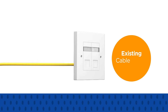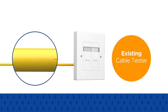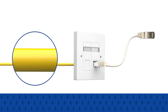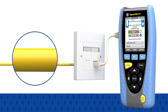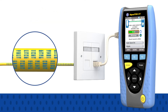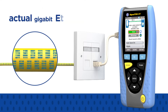Existing cable testers often do a poor job of simulating network traffic because they do not transmit real Ethernet frames. However, SignalTex CT accurately measures real-world performance by loading the cable with actual Gigabit Ethernet data.